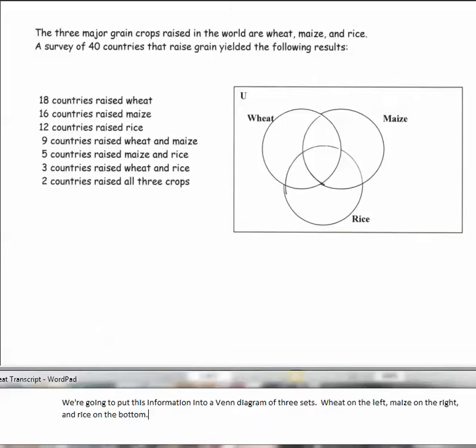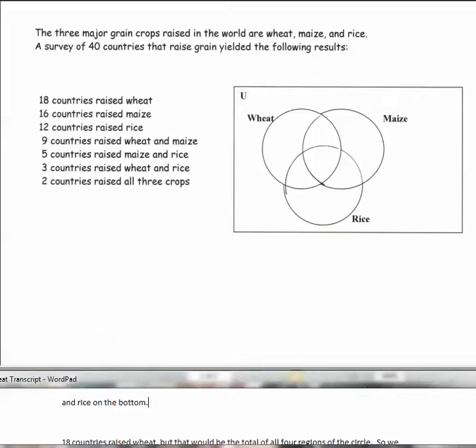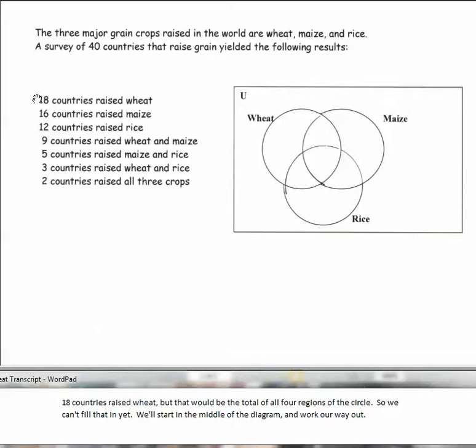We're going to put this information into a Venn diagram of three sets: wheat on the left, maize on the right, and rice on the bottom. The first line says 18 countries raised wheat, but that would be the total of all four regions of the wheat circle. So we can't fill that in yet. We'll have to start in the middle of the diagram and work our way out.